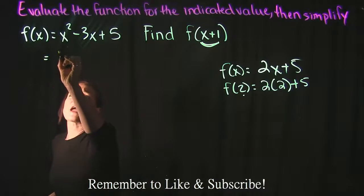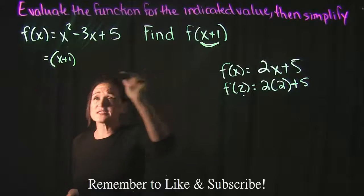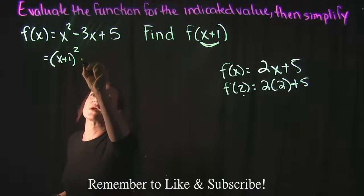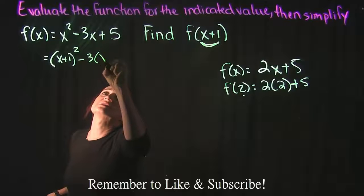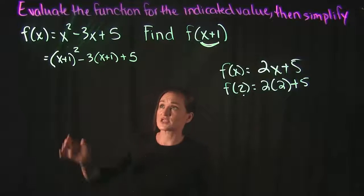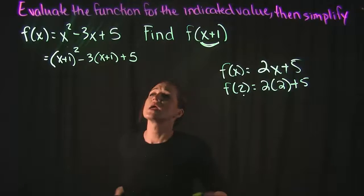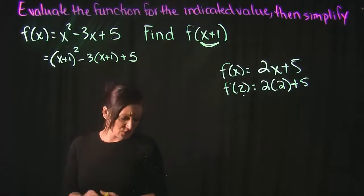That means we're going to have x plus 1 squared minus 3 times x plus 1 plus 5. All we did was take x and replace it with x plus 1. Now we need to simplify.